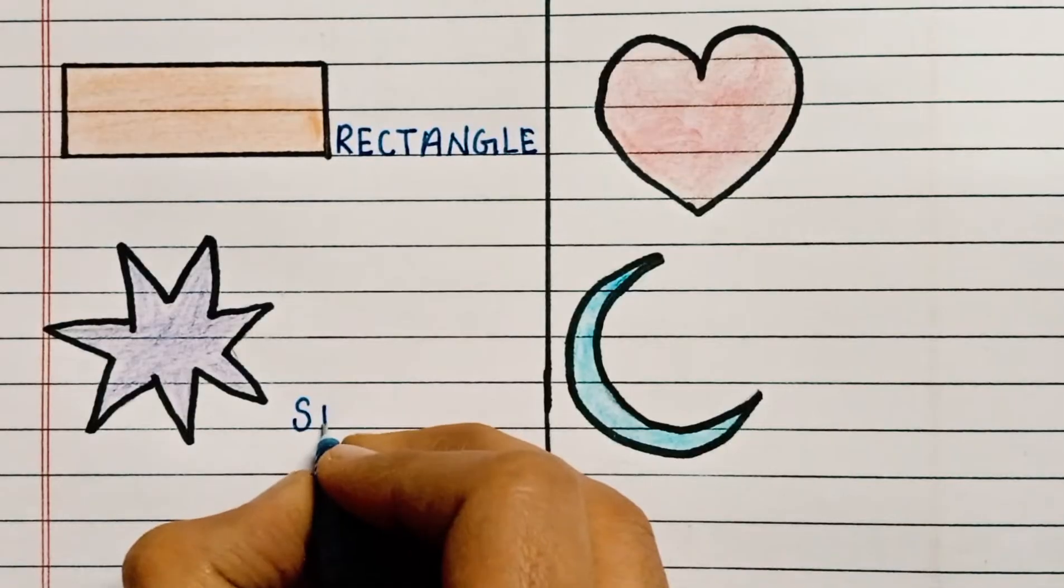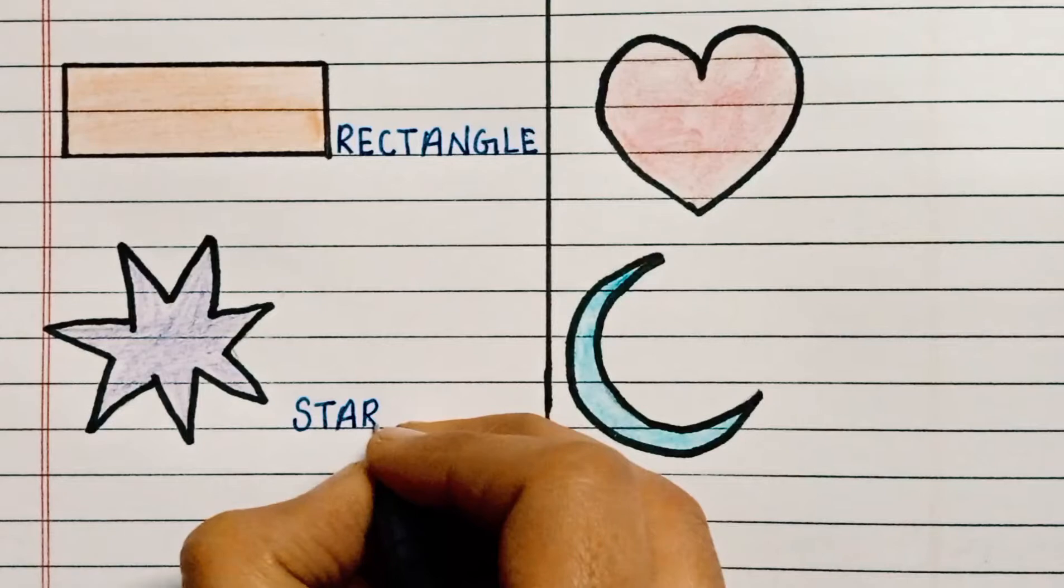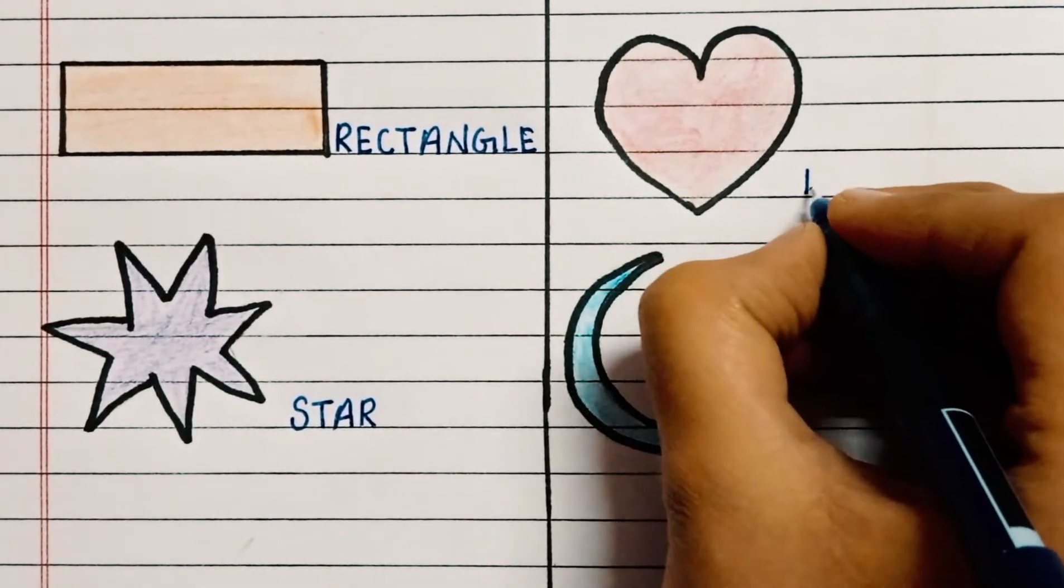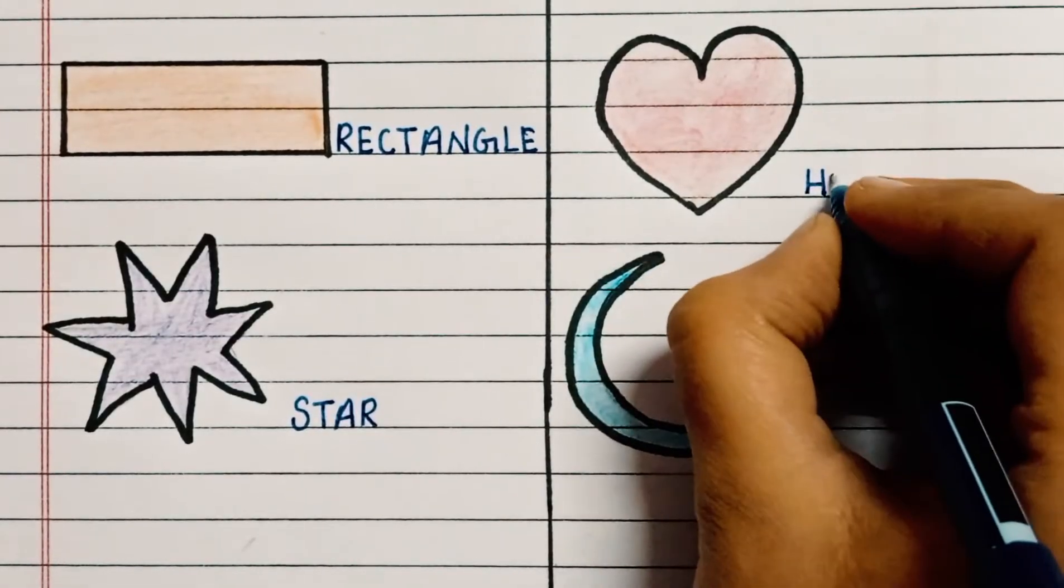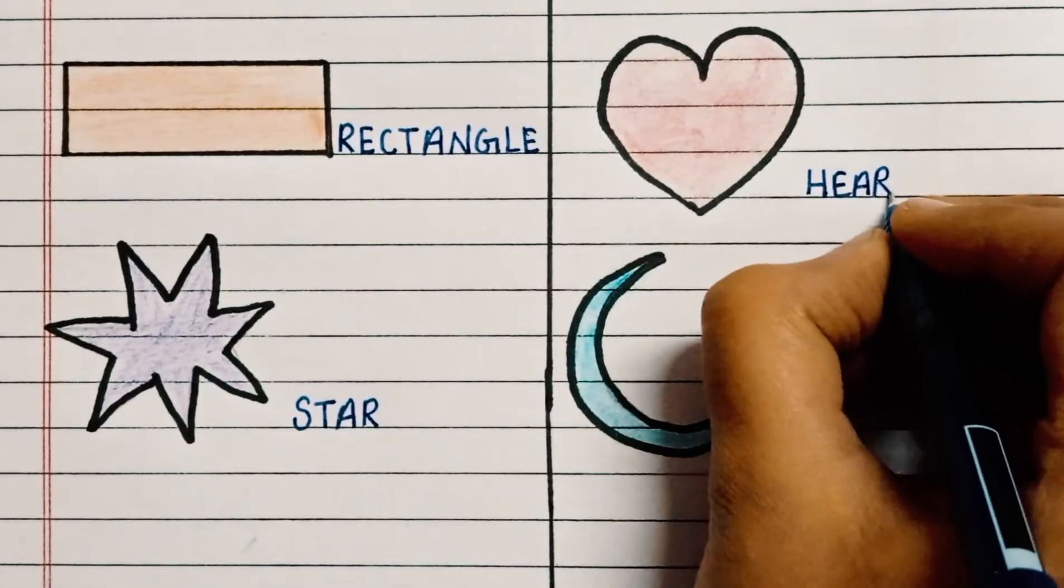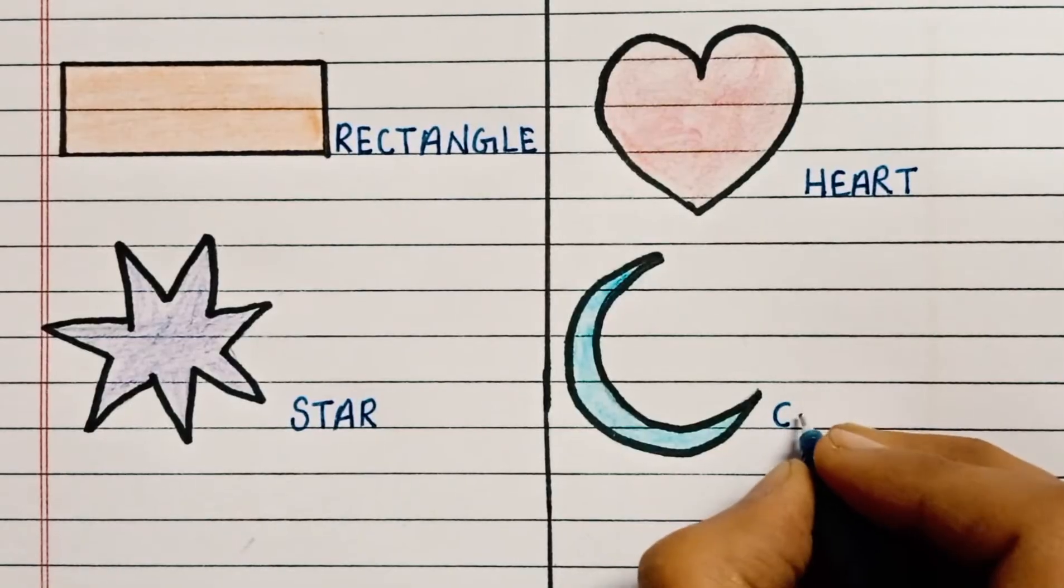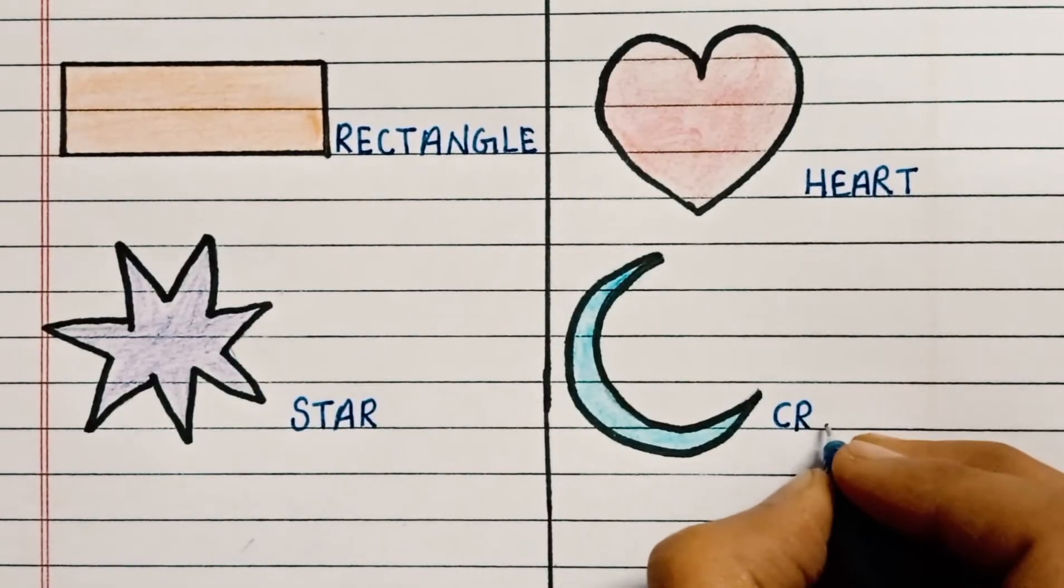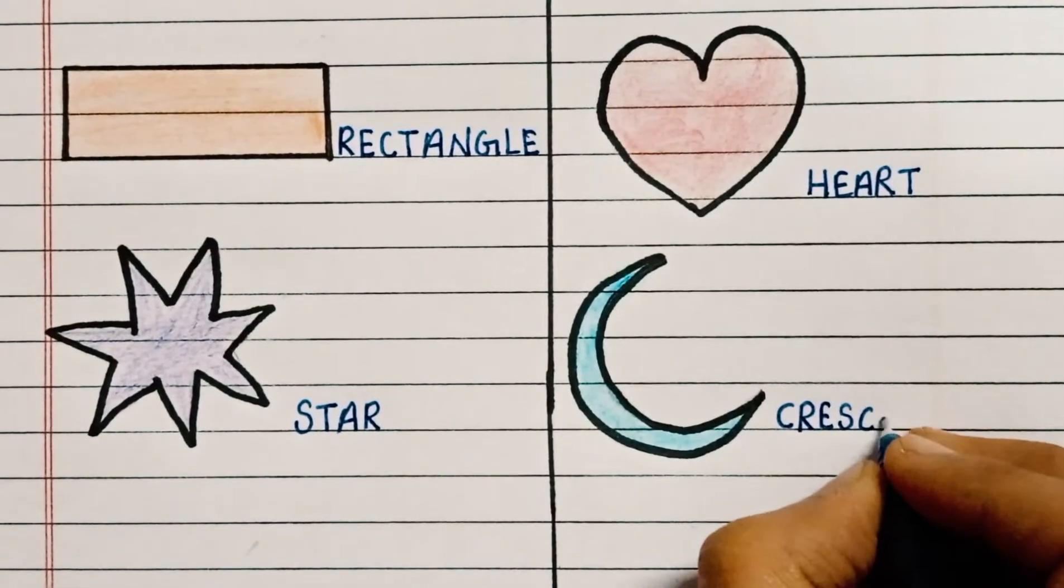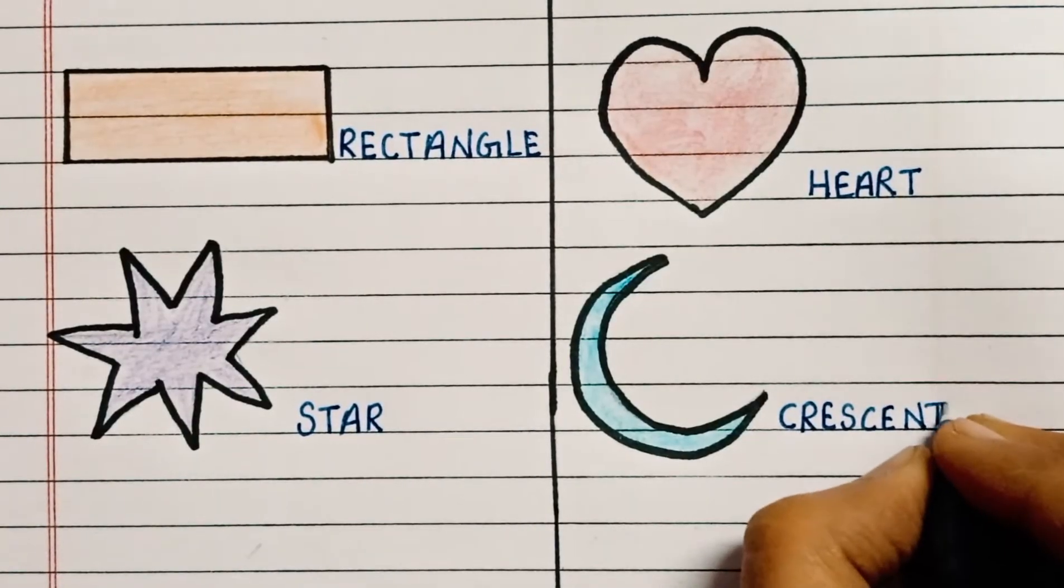S-T-A-R, Star. Star shape. H-E-A-R-T, Heart shape. C-R-E-S-C-E-N-T, Crescent.